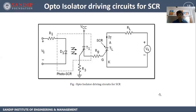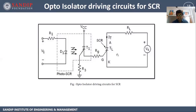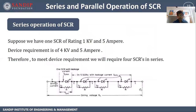Opto-isolated driving circuit for SCR: input voltage is applied and fed as current to diode B1, which is an LED (light emitting diode). The LED emits light, which triggers thyristor T1. Once thyristor T1 is triggered, current starts flowing through it and is applied to the gate of the main thyristor, causing it to turn on and conduct. This is the opto-isolated driving circuit for SCR.